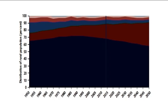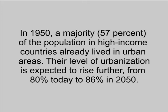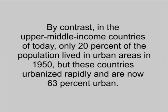Figure 4 shows that the high-income countries of today have been highly urbanized for several decades. Upper middle-income countries have experienced the fastest pace of urbanization since 1950. In 1950, a majority — 57% — of the population in high-income countries already lived in urban areas. Their level of urbanization is expected to rise further from 80% today to 86% in 2050. By contrast, in the upper middle-income countries of today, only 20% of the population lived in urban areas in 1950, but these countries urbanized rapidly and are now 63% urban.